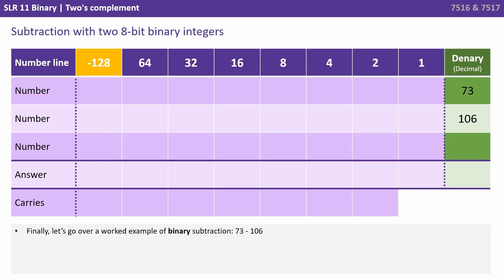So finally, let's go over a worked example of binary subtraction. So let's do 73 minus 106. Now we're in two's complement, so our most significant bit has a negative weighting, negative 128.